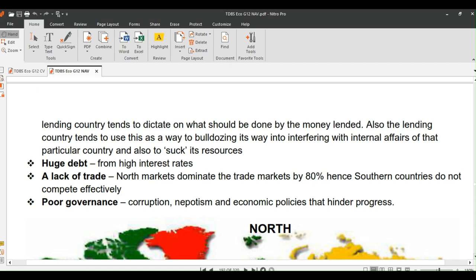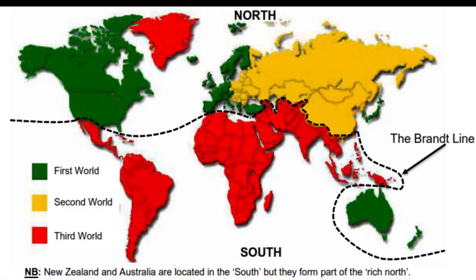Another reason why countries in the South are not developed is huge debt caused by high interest rates. Lack of trade is another reason — northern markets dominate the trade sector by 80 percent, so southern countries do not compete effectively. The last reason is poor governance: corruption, nepotism, and economic policies that hinder progress all contribute to failure to become developed.